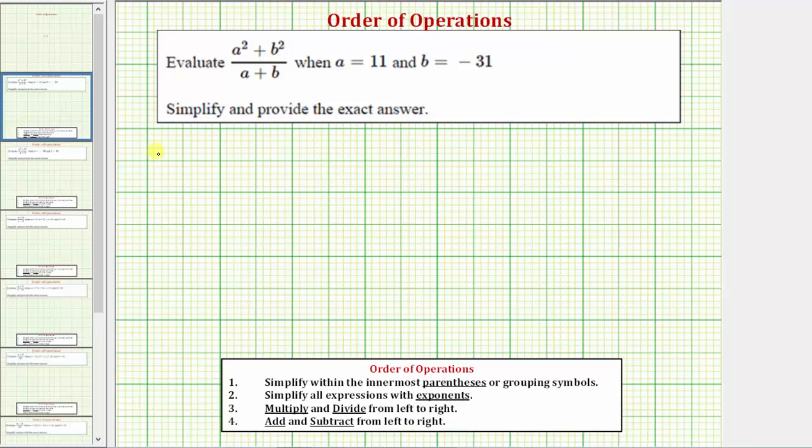So beginning with the given expression, the quantity a squared plus b squared, divided by the quantity a plus b, we'll perform the substitution. In the numerator, a squared is 11 squared, plus b squared, which is the square of negative 31, divided by the quantity a plus b, which would be the quantity 11, plus negative 31.